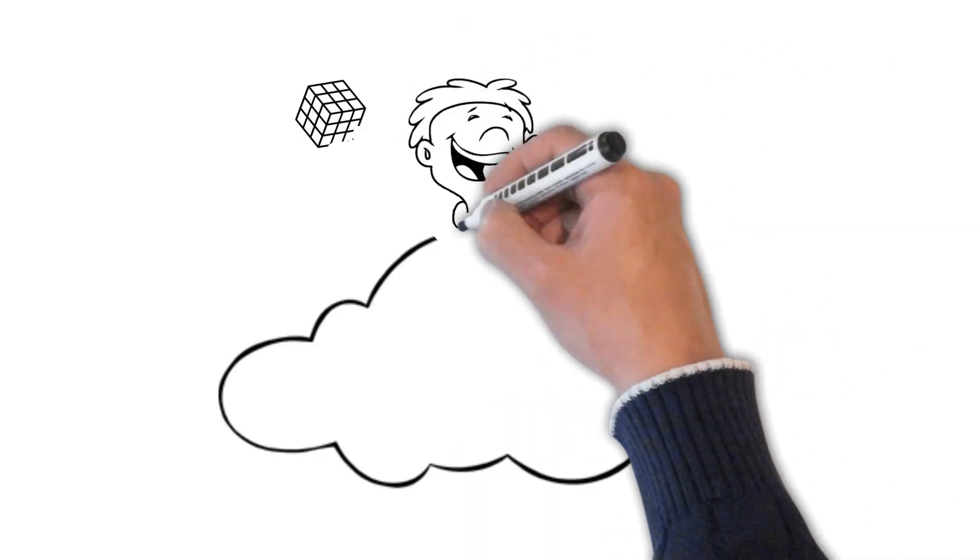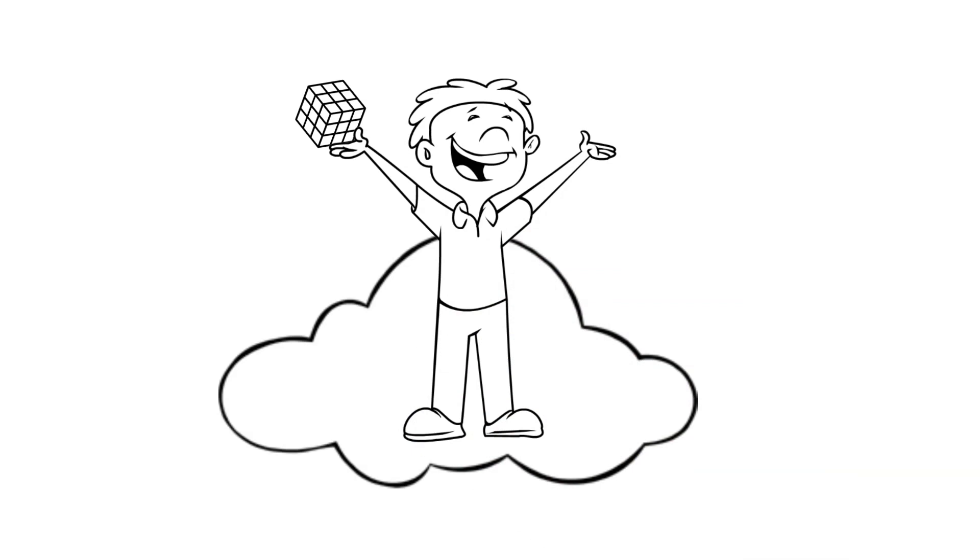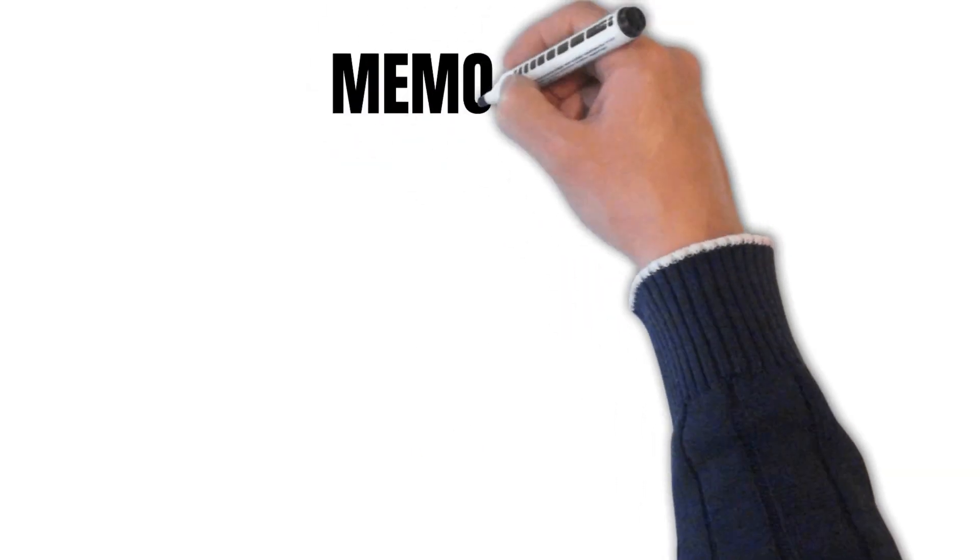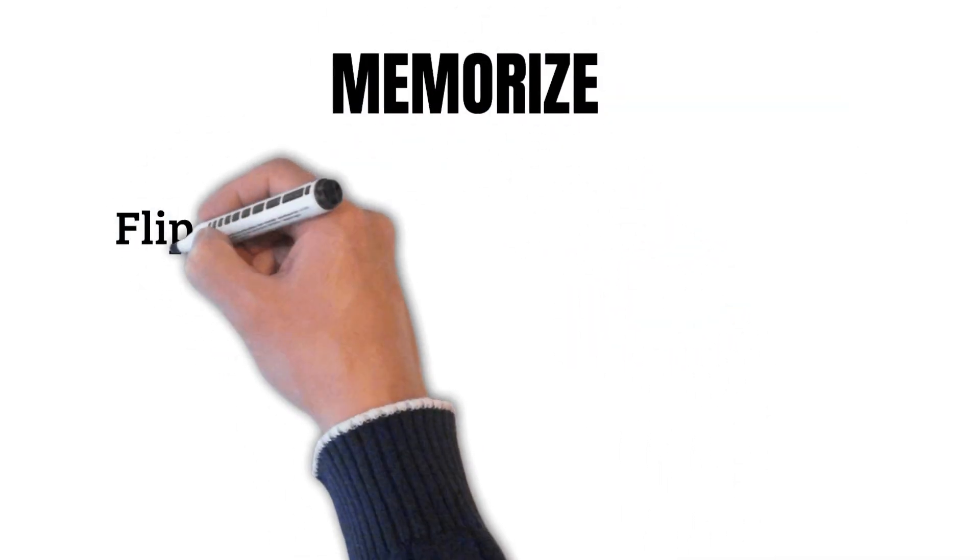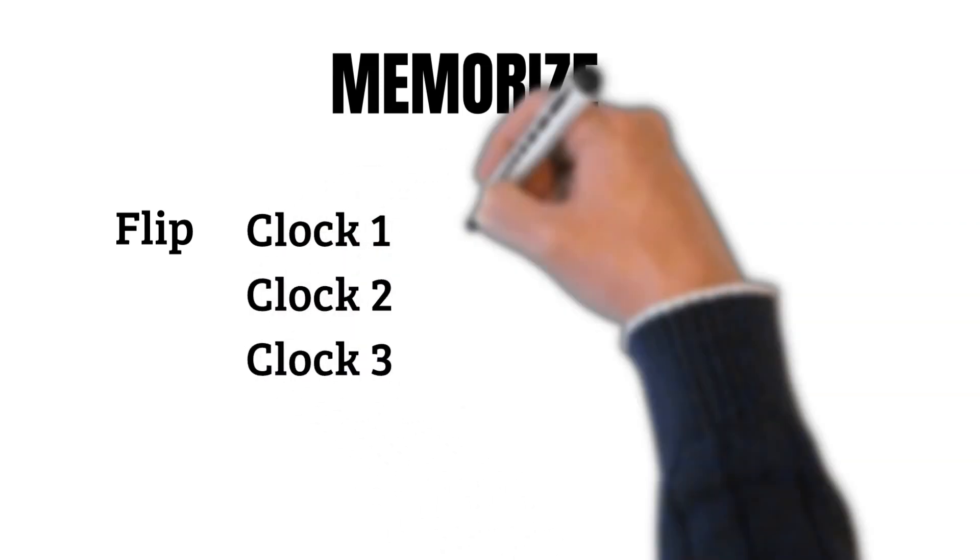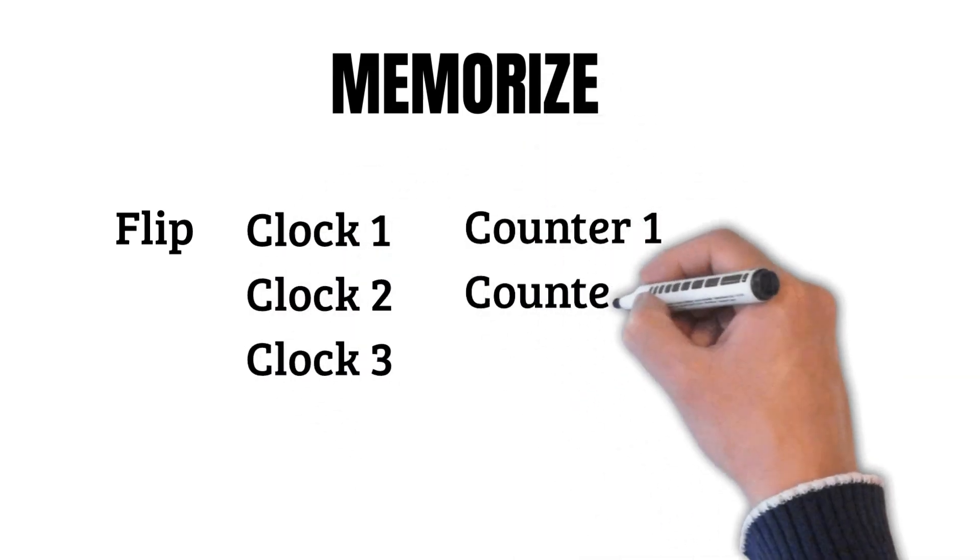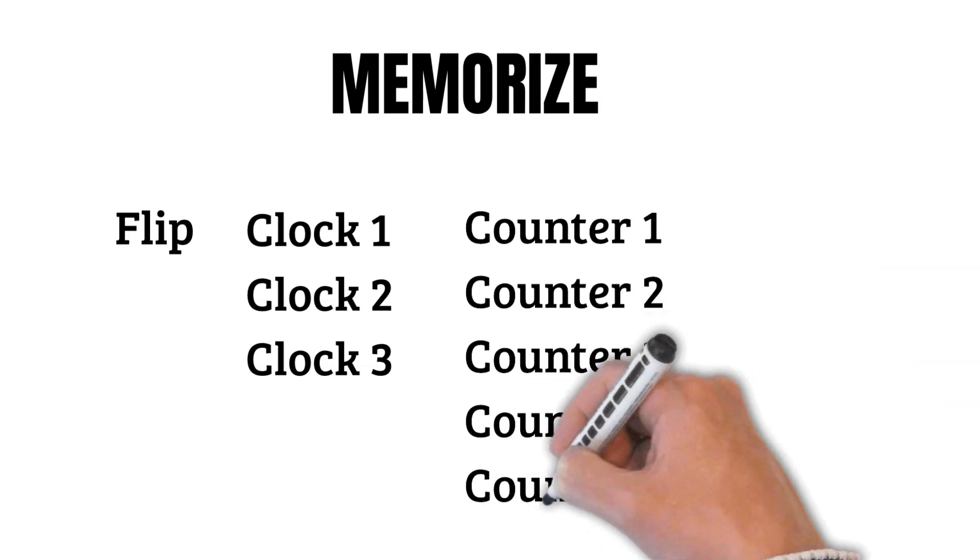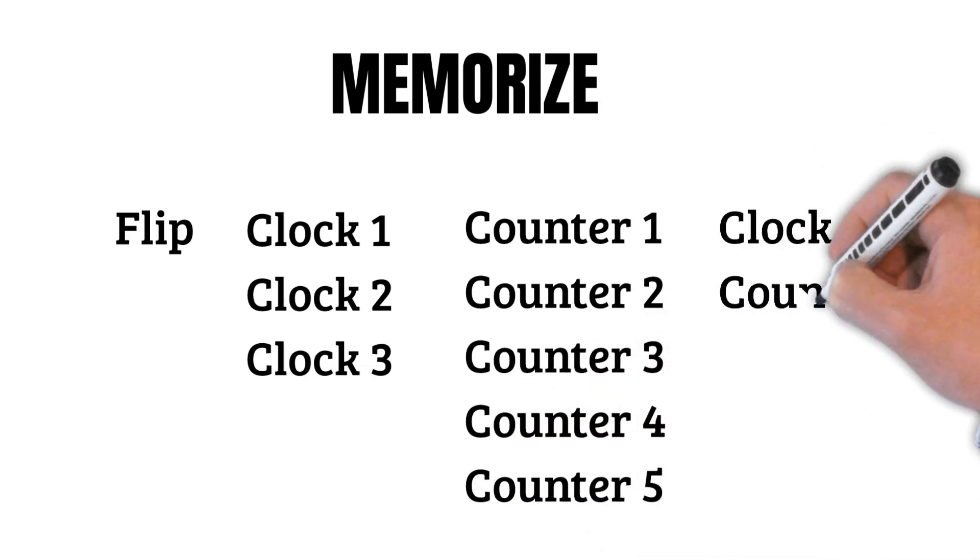Now, let's fulfill your dream of finally solving a Rubik's cube. Memorize this: Flip, clock one, clock two, clock three, counter one, counter two, counter three, counter four, counter five, clock counter. Don't proceed until you have this memorized.